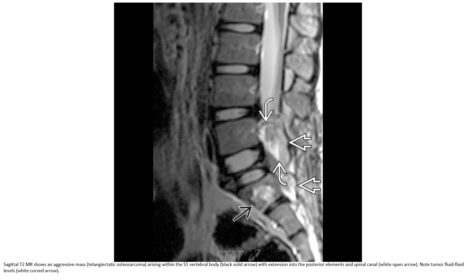This is a T2-weighted image showing an aggressive mass called telangiectatic osteosarcoma, arising within the S1 vertebral body with extension into the posterior element and spinal canal. Note the tumor fluid-fluid levels.